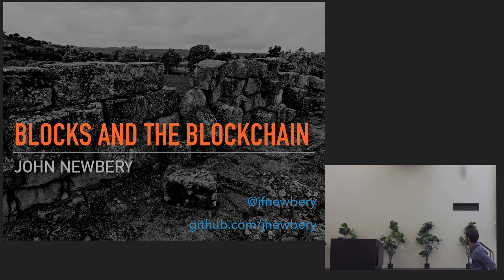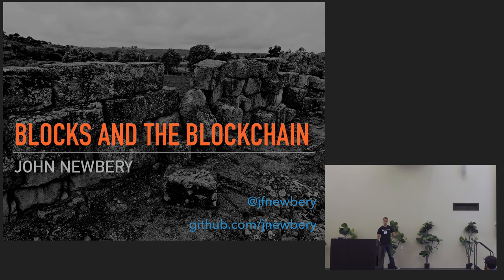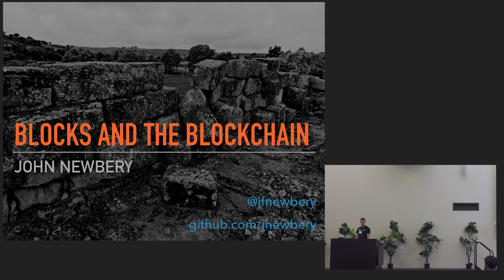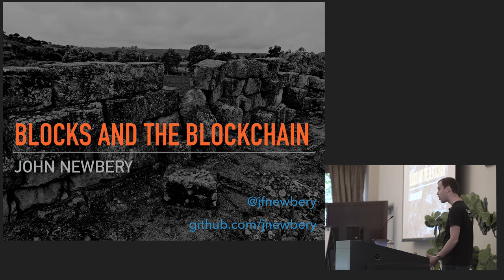We talked about the first primitive structure in Bitcoin, which is a transaction. Bitcoin is a digital currency, so we need some way of transferring value around, and that is a transaction. We also talked about the first cryptographic primitive used in Bitcoin, which is EC-DSA — digital signing over the elliptic curve over a finite field. This session is about the next building block of the blockchain, which is a block — the second primitive data structure in Bitcoin. I'm also going to introduce the second primitive cryptographic feature of Bitcoin, which is hashing.